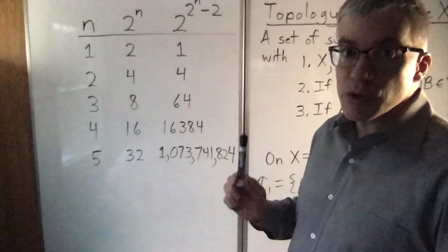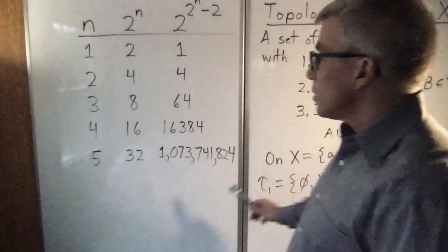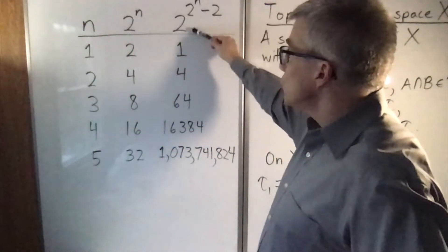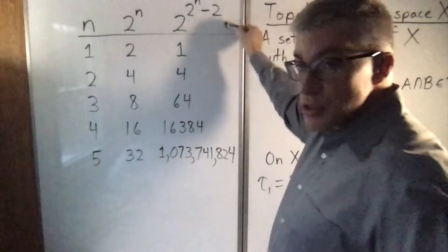Here's a sequence of numbers that grows really fast. Start with n, do 2 raised to the n, and then 2 raised to the 2 to the n minus 2 power.